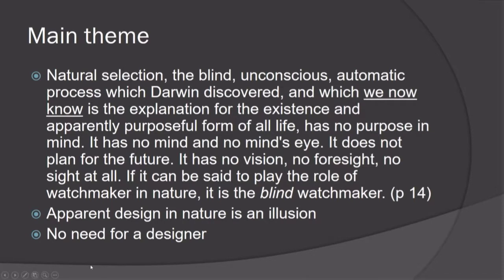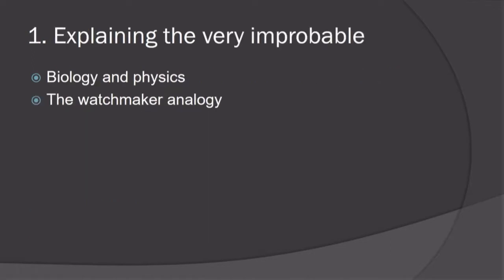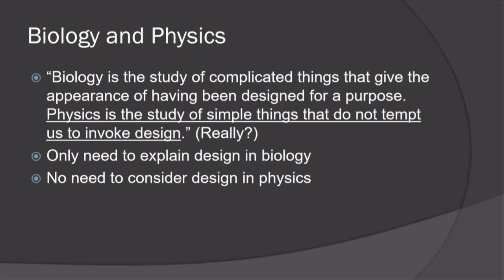Chapter 1 is on explaining the very improbable. Richard Dawkins makes this interesting comment on page 1: 'Biology is the study of complicated things that give the appearance of having been designed for a purpose. Physics is the study of simple things that do not tempt us to invoke design.' Does that sound like a reasonable statement to you? Some are nodding and some are shaking their head.